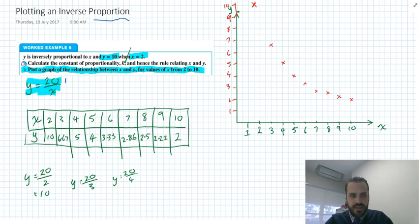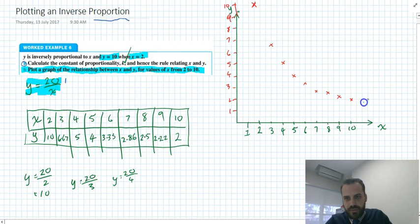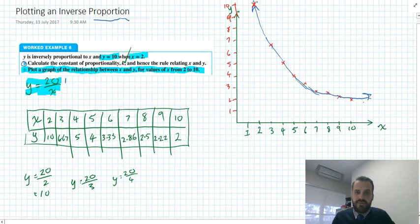Now, what you can see is you get this really nice little curve. Curve. Starts up here. It curves through those. Excellent. Okay, that's how you plot an inverse proportion. You'll know you've got it right because you'll get this nice little curve like that.